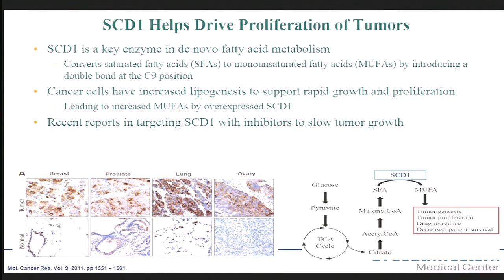SCD-1 is a key enzyme in the de novo fatty acid metabolism pathway. It converts saturated fatty acids into monounsaturated fatty acids by introducing a double bond at the C9 position. This de novo fatty acid metabolic pathway is upregulated in tumors to support the rapid proliferation of cancer cells, and because of this, we're seeing a lot of targets in the enzymes of this pathway for inhibition to target cancer therapy.